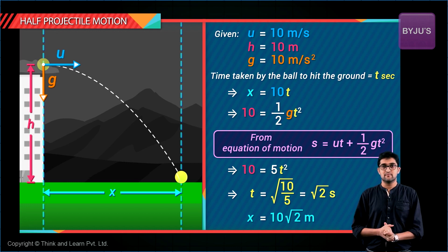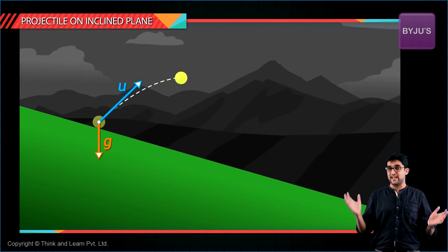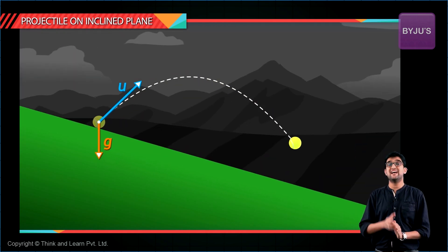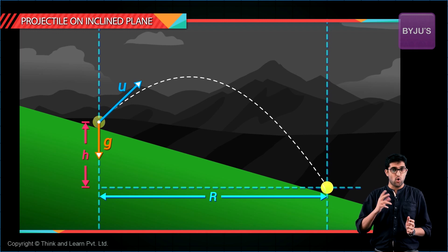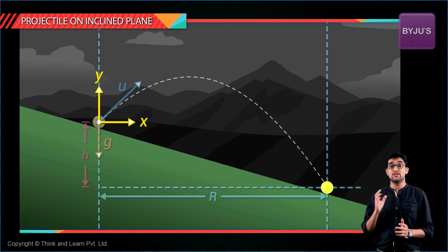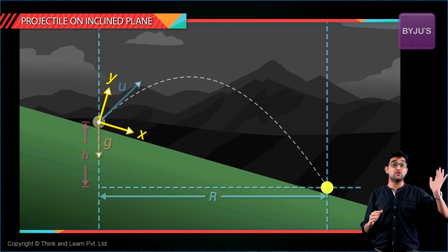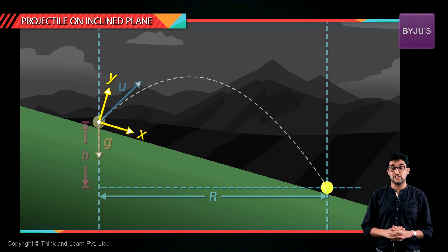On similar lines, if we get a projectile on an inclined plane, how do we solve it? Use the exact same method. The only difference being instead of using horizontal axis and vertical axis, use an axis along the inclined plane and perpendicular to the inclined plane and do the same thing. Write the equations of motion for these two axes, solve the equation and get your answer.